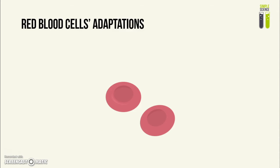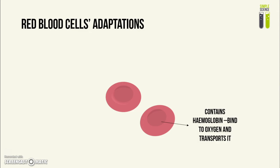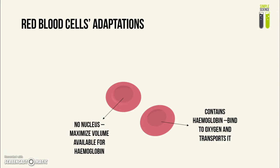Although this is not specifically in the blood topic, it is required to know for IGCSE. Red blood cells have hemoglobin in them which binds to oxygen and helps to transport it around the body. They also have no nucleus, which means that the volume available for hemoglobin can be maximized, serving the purpose of transporting more oxygen.